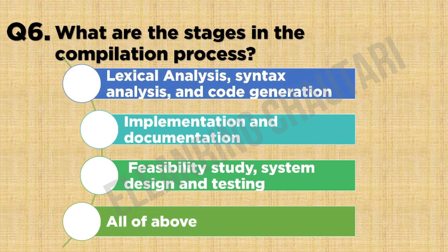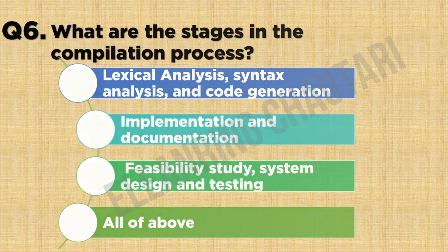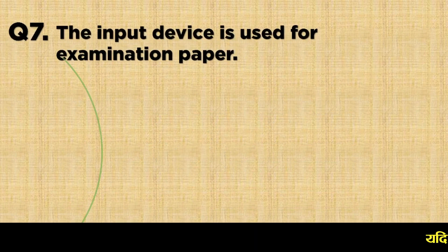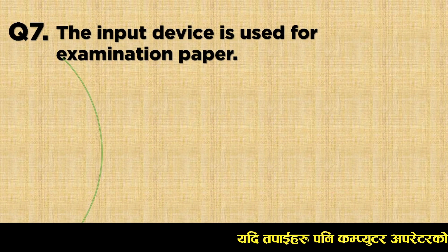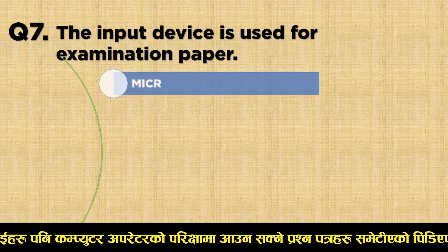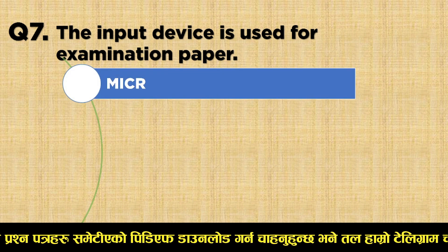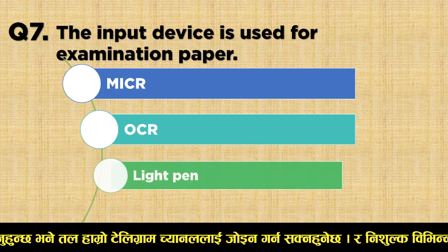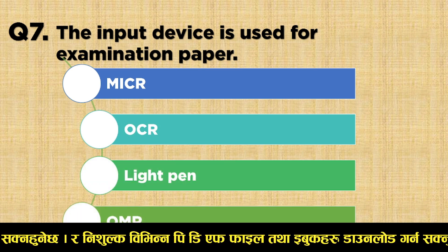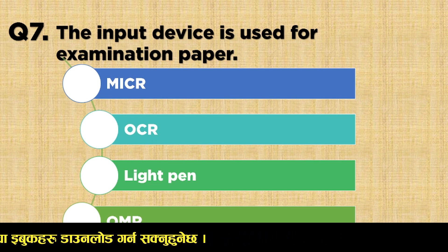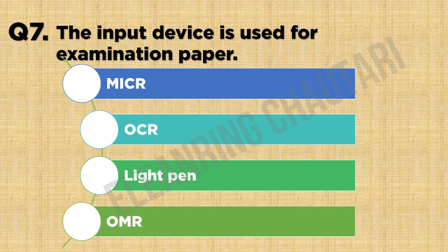Question 7: The input device used for examination paper. Option A: MICR. Option B: OCR. Option C: light pen. Option D: OMR. The correct answer is Option D: OMR.